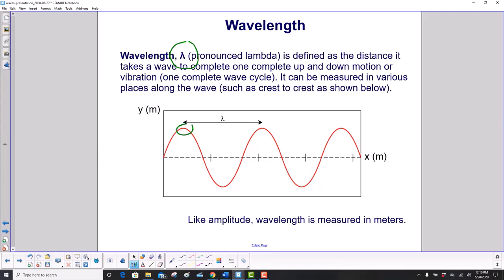Here's one crest, here's another crest. This distance here is the wavelength. Likewise, we could have gone from here to here—that's also a wavelength. Like amplitude, wavelength is measured in meters.